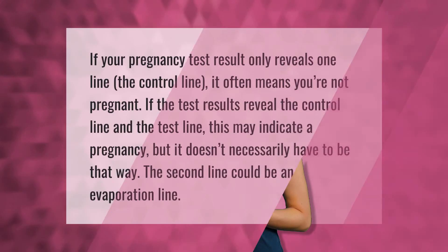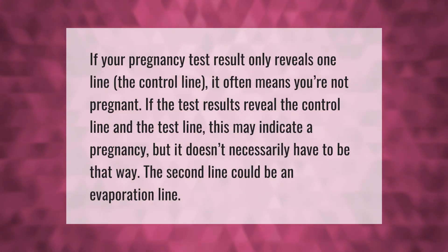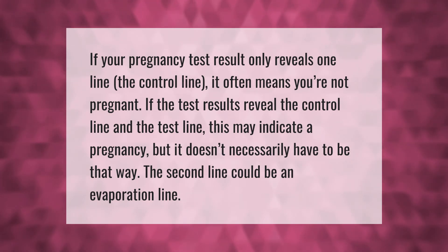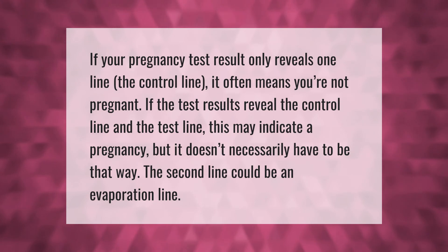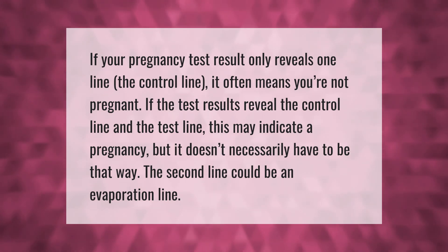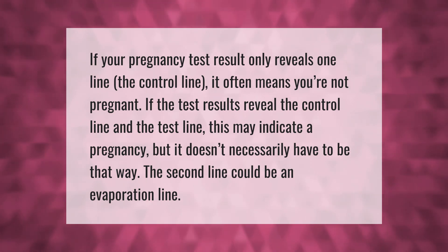If your pregnancy test result only reveals one line — the control line — it often means you're not pregnant. If the test results reveal the control line and the test line, this may indicate a pregnancy, but it doesn't necessarily have to be that way. The second line could be an evaporation line.